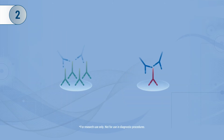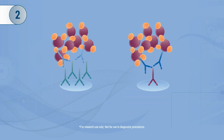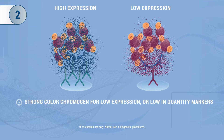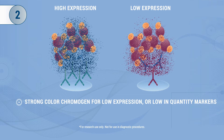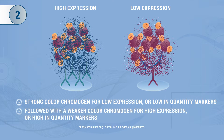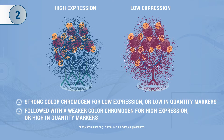Tip 2: If you want to detect multiple proteins that are highly and lowly expressed in tissue, consider using a stronger colored chromogen first for the lower expressed marker, followed by the weaker color for the highly expressed marker. This may avoid overpowering the initial stain of the low expressed protein.